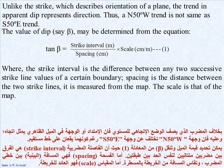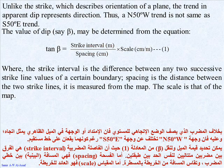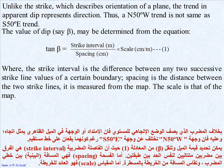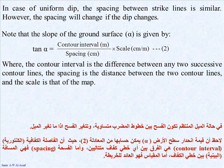Unlike strike, which describes the orientation of a plane, the trend in apparent dip represents a direction. Thus, a north 50 degrees west trend is not the same as a south 50 degrees east trend. The value of dip, beta, may be determined from the equation: tan(beta) equals the strike interval in meters divided by the spacing in centimeters times the scale in centimeters per meter, where the strike interval is the difference between any two successive strike line values of a certain boundary, and the spacing is the distance between the two strike lines measured from the map.